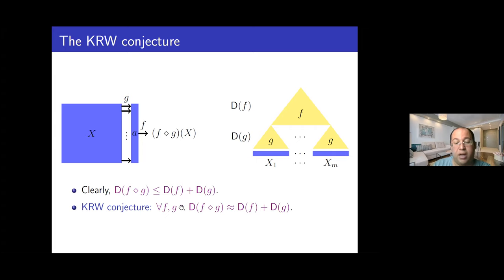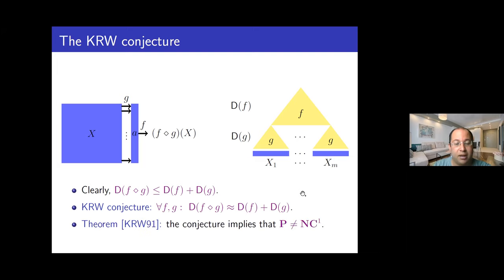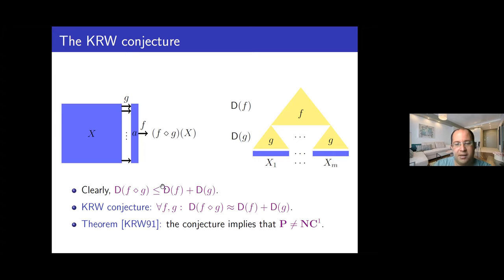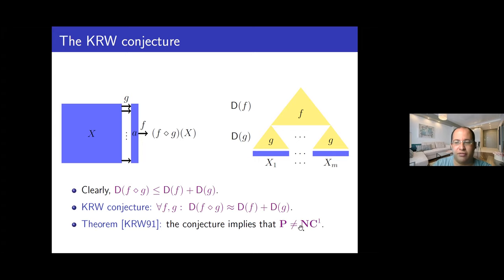Even weaker versions of this conjecture would be interesting. In particular, this conjecture is not only interesting in its own right, but Karchmer-Raz-Wigderson in '91 showed that if this conjecture is true, it would imply that P is different from NC1 — solving this holy grail question. Even much weaker versions of this conjecture would actually imply that P is different from NC1.